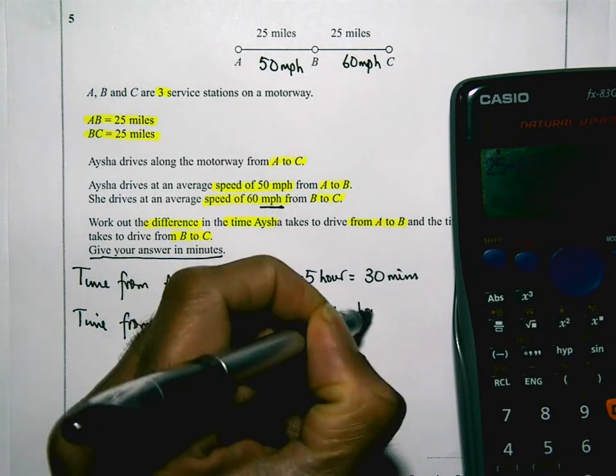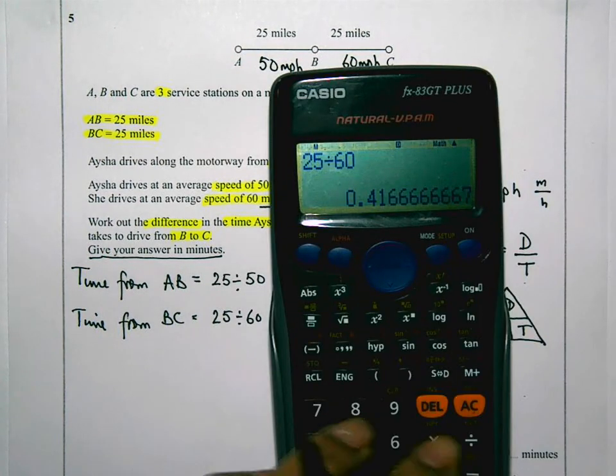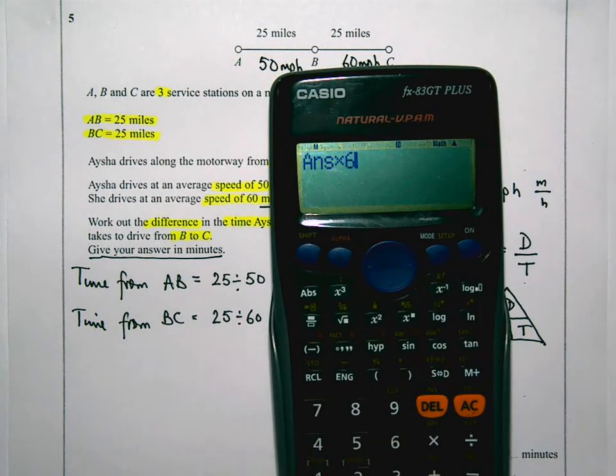And again, I want to work out how much that is in minutes. So I'm going to times that by 60. And it gives me 25. 25 minutes.